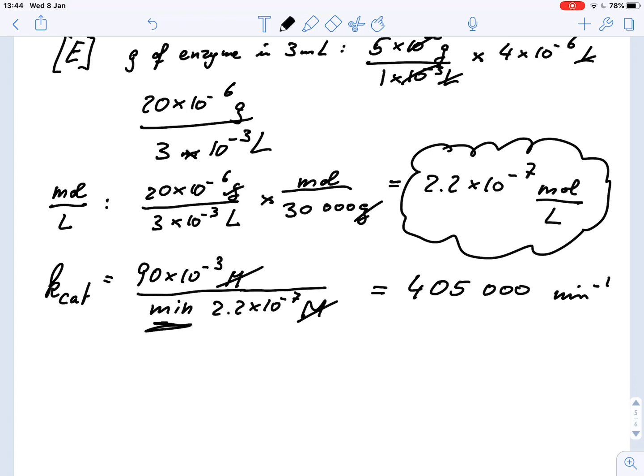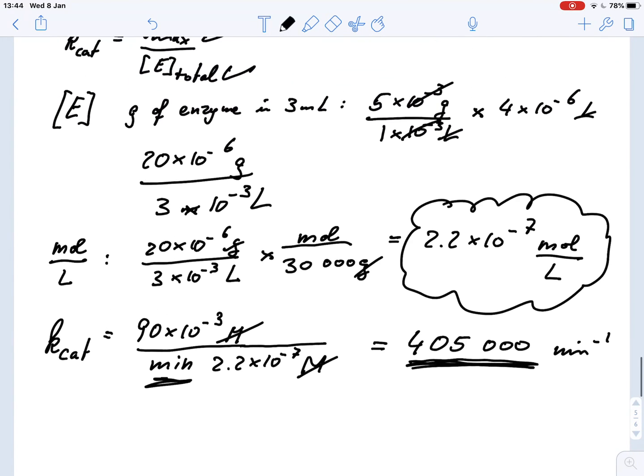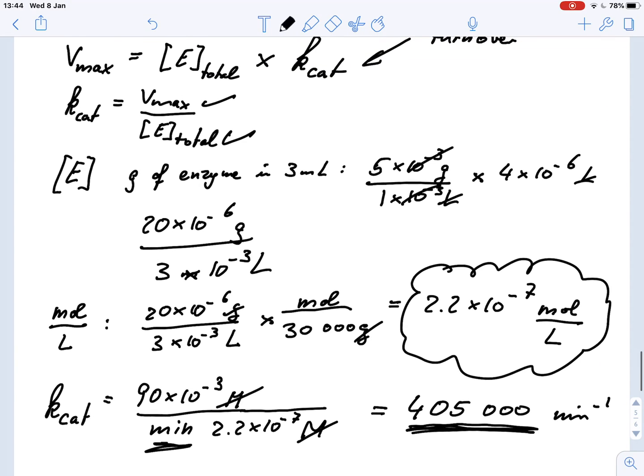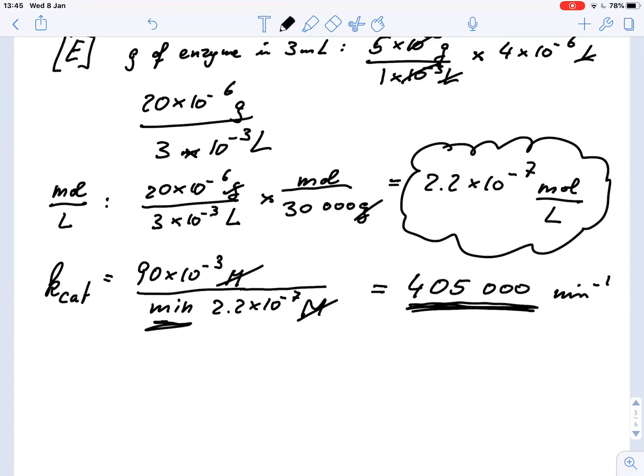So this means our enzyme, each molecule of enzyme, can convert 405,000 molecules of substrate into product. This is how you can calculate the turnover number of an enzyme. The crucial bit is that you convert the amount of enzyme that you use in your assay into a concentration. And I hope with this video you should not find it too difficult to do that. Thank you very much for watching.